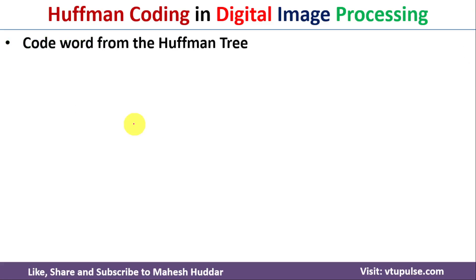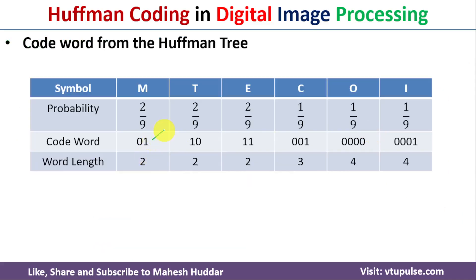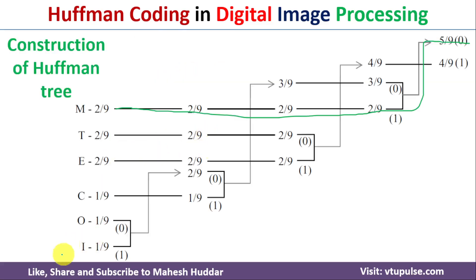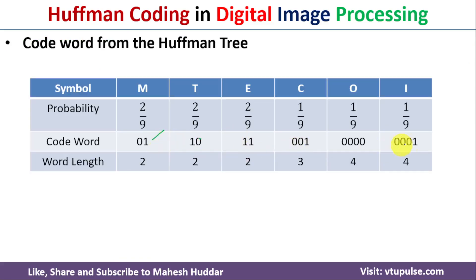Next, we find the codeword for each symbol by tracing the path from the root node to the leaf in the Huffman tree. For symbol M, we go from 0 then to 1, so the codeword is 01. For T, we go 1 then 0, so the codeword is 10. For E, we go 1 then 1, giving codeword 11. We similarly find codewords for all remaining symbols.